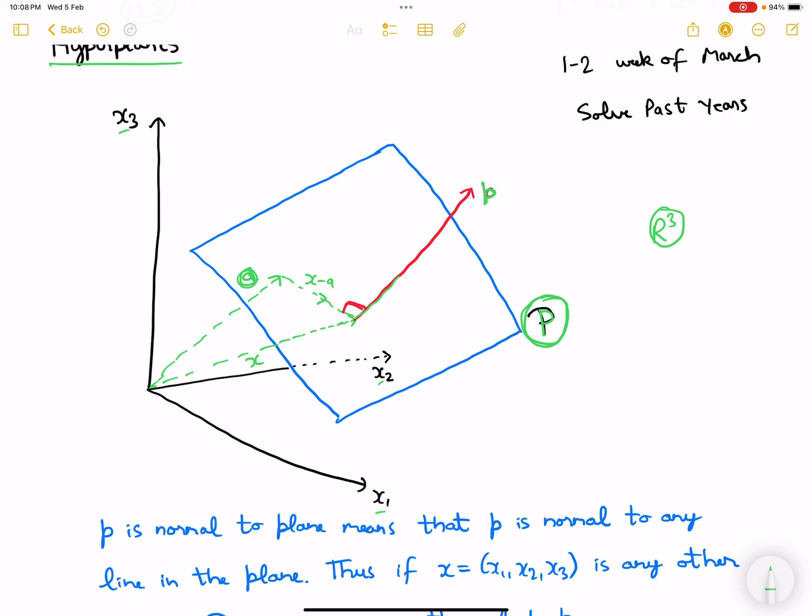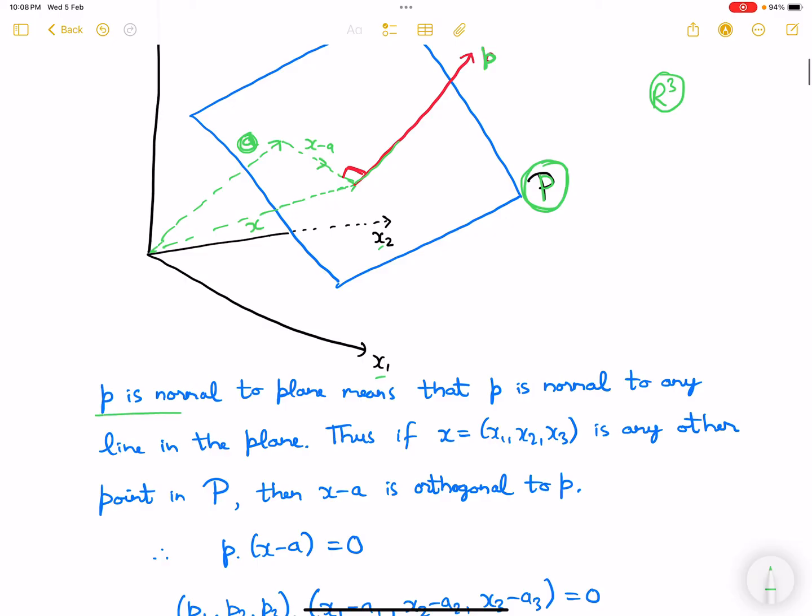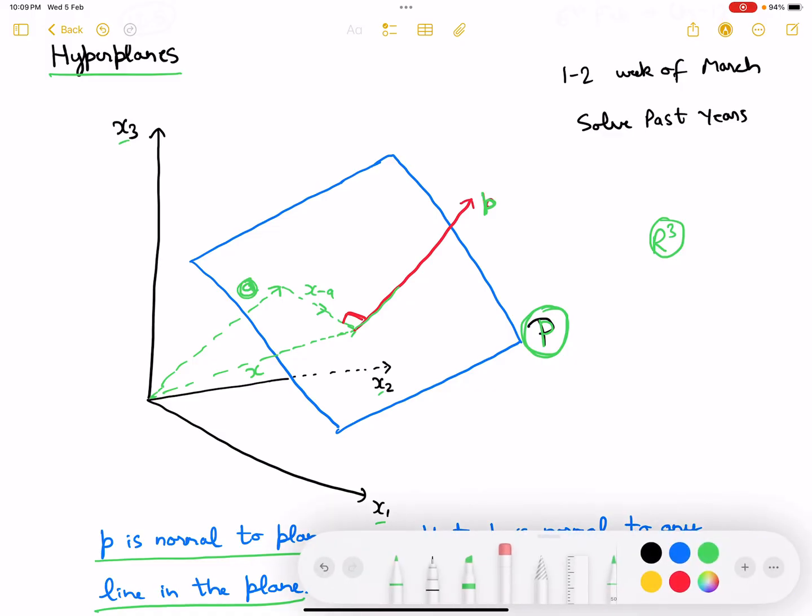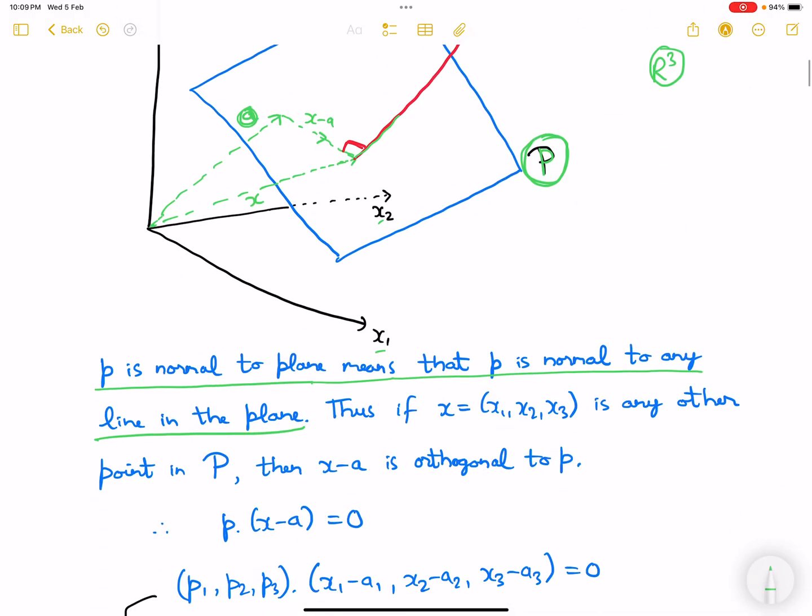Now, p is normal to the plane means that p is normal to any line in the plane. Basically, if you are standing on a floor making a 90 degree angle, this will make 90 degrees with any line. Moving forward, p is normal to plane means p is normal to any line in the plane.